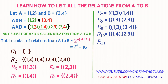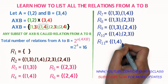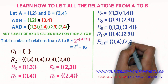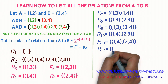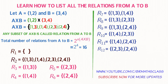R11, the eleventh relation: again take the second element ordered pair (1,4). Moving right, the immediate next is ordered pair (2,3), which was already used in R10. So the next element is ordered pair (2,4). R11 is the set containing ordered pair (1,4) and ordered pair (2,4). For R12, the twelfth relation: take ordered pair (2,3) and move right — the next element is ordered pair (2,4). So R12 is ordered pair (2,3) and ordered pair (2,4). There is a little trick here that becomes easy with practice.